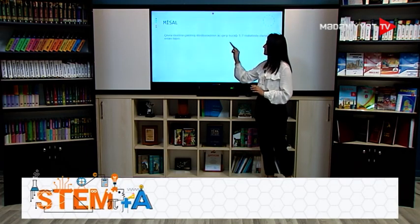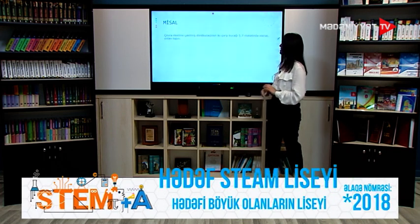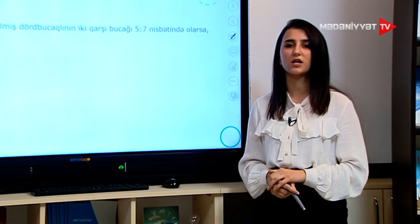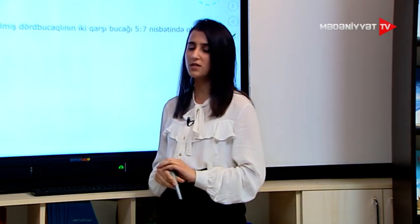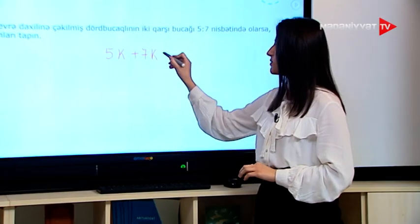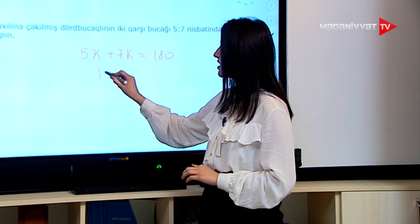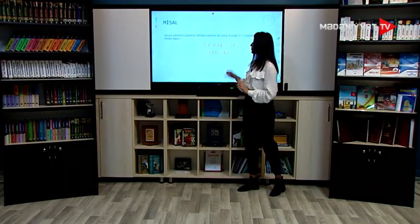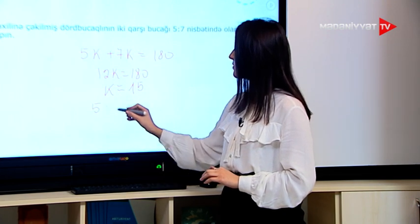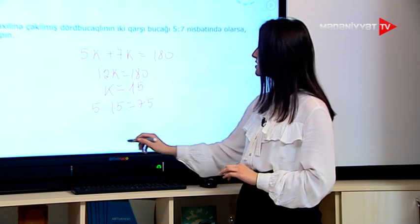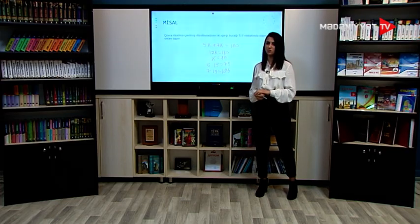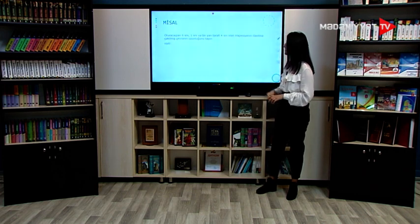Bir misalımıza baxaq: çevrə daxilində çəkilmiş dörd bucaqlının 2 qarşı bucağı 5:7 nisbətində olarsa, onları tapın. Çevrə daxilində çəkilmiş dörd bucaqlının qarşı bucaqlarının cəmi 180 dərəcə olacaq. 5:7 nisbətindədirsə, biz bu bucaqları 5K və 7K olaraq götürürük və bunların cəmi 180 dərəcəyə bərabərdir. Buradan alırıq ki, 12K = 180, K = 15. Birinci bucaq: 5 × 15 = 75 dərəcə; digər bucaq: 7 × 15 = 105 dərəcə. Gördüyümüz kimi, 75 + 105 = 180 dərəcə.